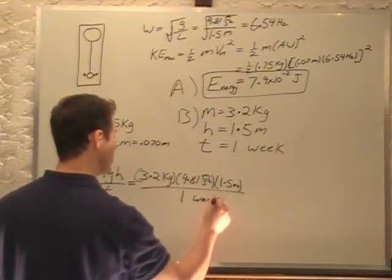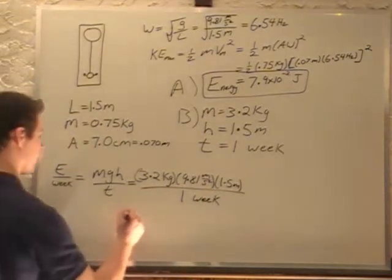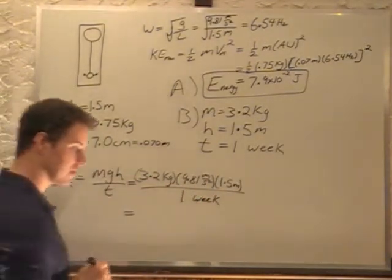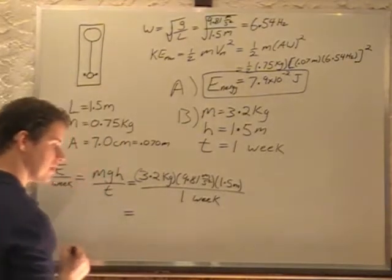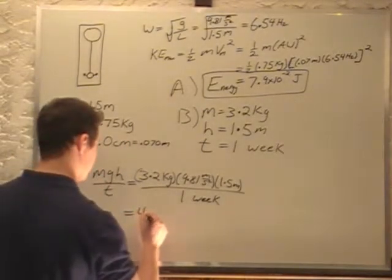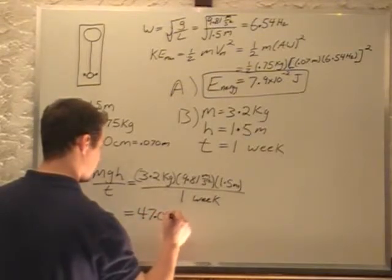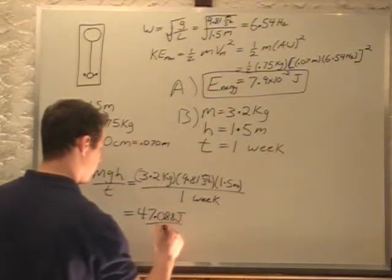So this is energy dissipated per week. Multiply that through, gives you 47.088 joules per week.